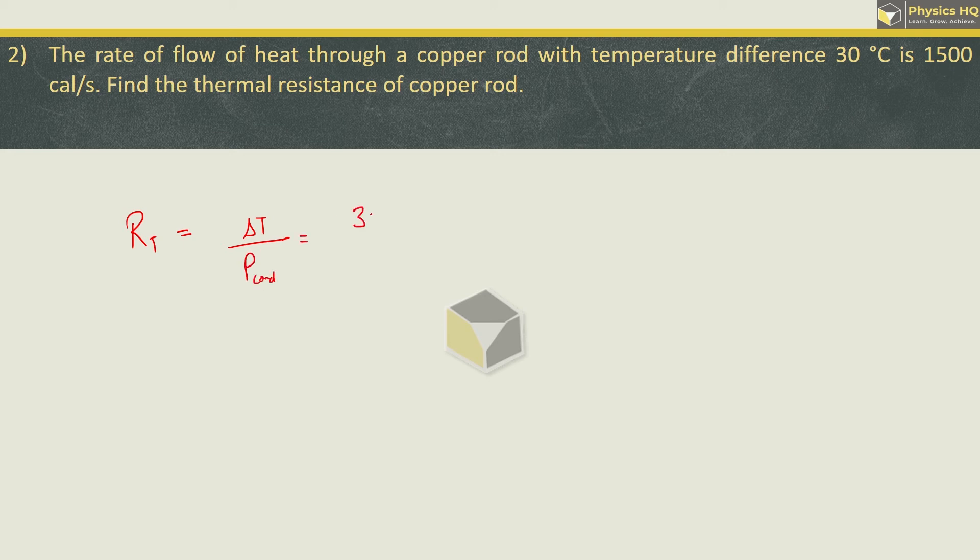Change in temperature here is 30 and rate of flow of heat is 1500. This will cancel and we are left with 1 by 50 which is nothing but 0.02 degree Celsius per second per calorie. Next we will see.